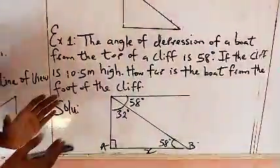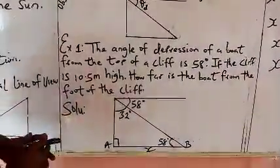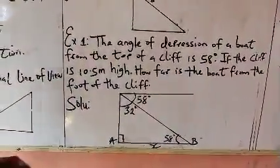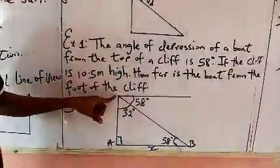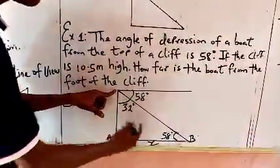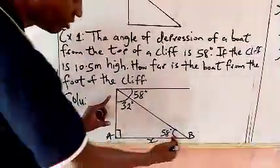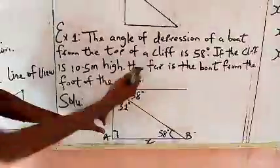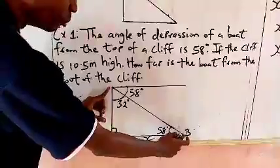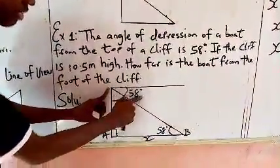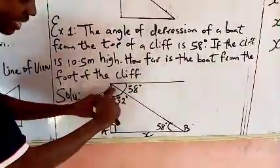This is a word problem so we have to interpret it in mathematical terms. This is the cliff running down vertically, and this is the boat. The angle of depression of the boat from the top of the cliff is 58 degrees — so this is the top of the cliff, this is the boat, and the angle between the normal horizontal view and the line of sight is 58 degrees.